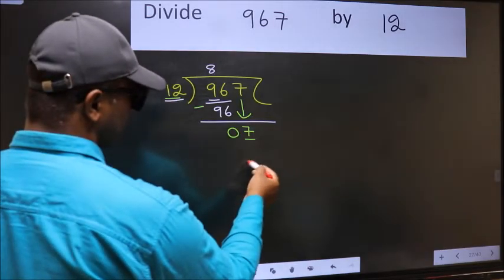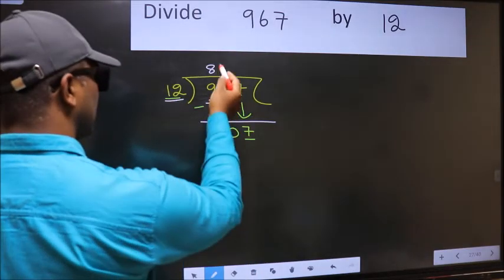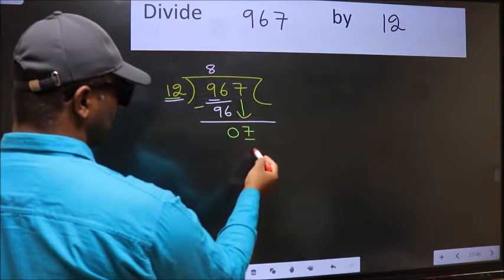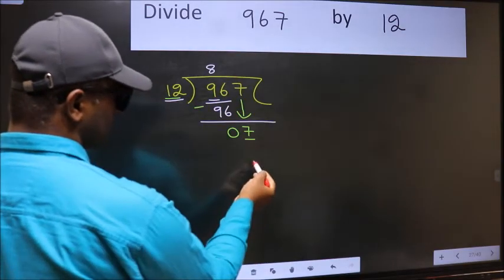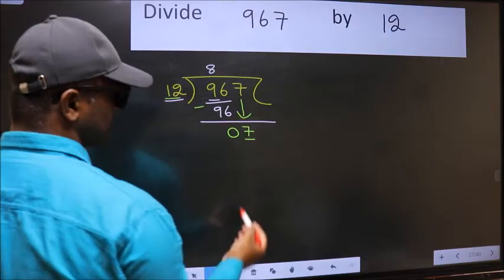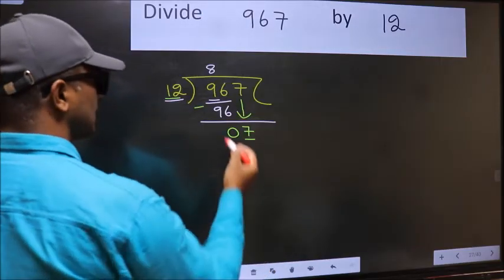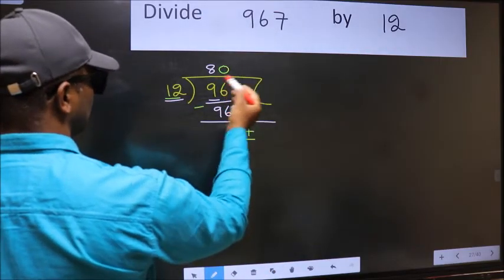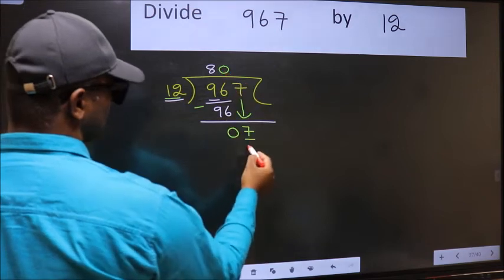If I take 1, we will get 12. But 12 is larger than 7. So what we should do is, we should take 0. So 12 into 0 is 0.